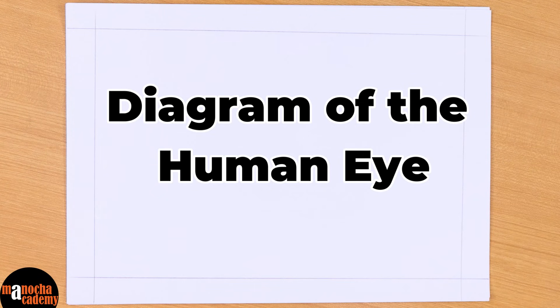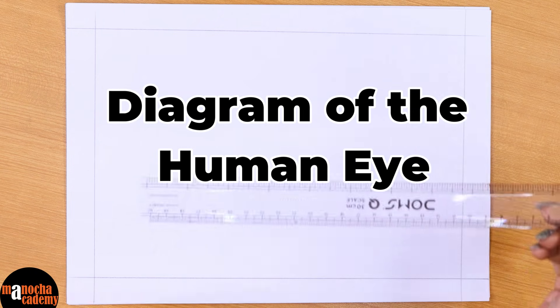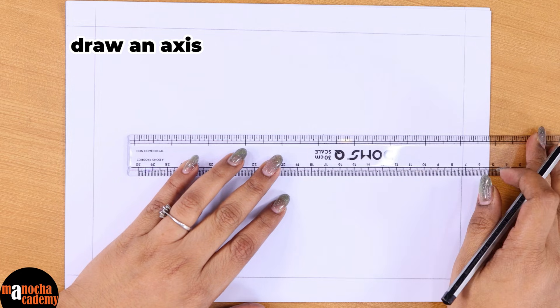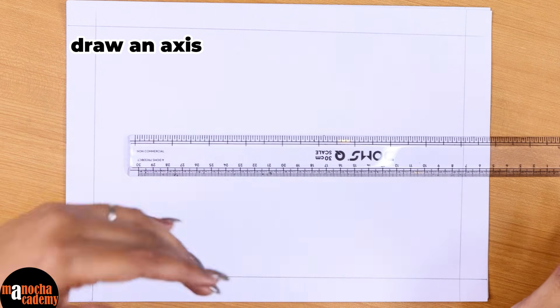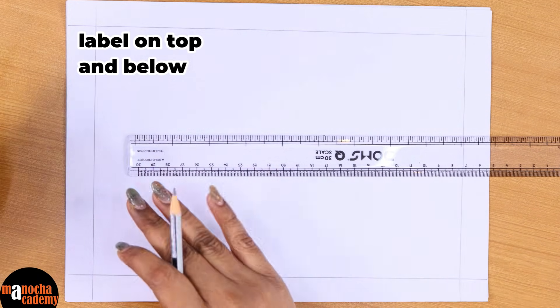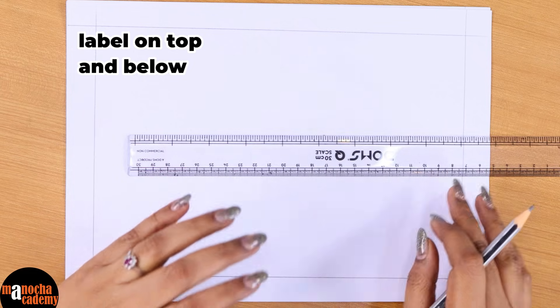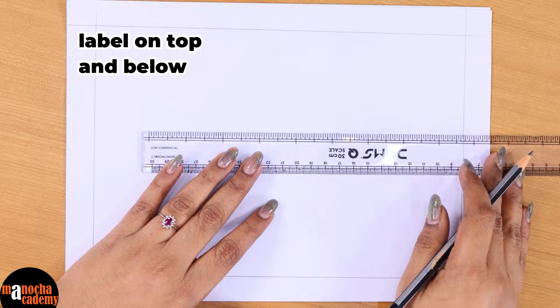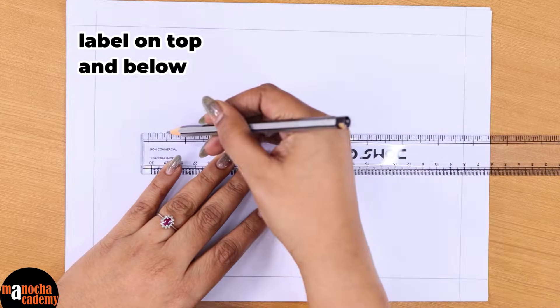Before we start drawing the diagram of the human eye, we will have to make an axis. This time the axis will be a horizontal axis, so we will try to label everything on top and below because the parts of the eye are all over — labeling everything on the right-hand side will not be possible. I will keep some space above and below, but I will draw a horizontal axis first. This will be the axis of the eye, and then somewhere at the center of this line we will place a compass.